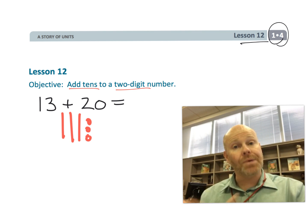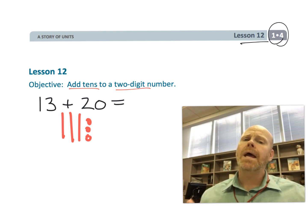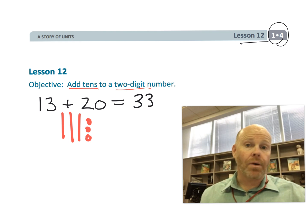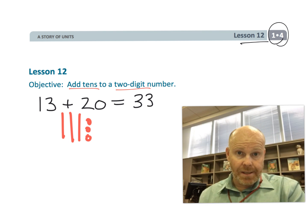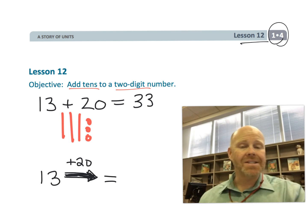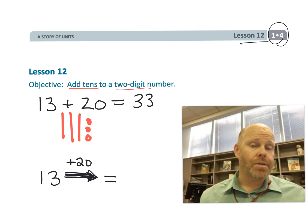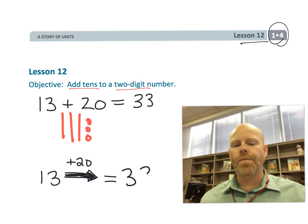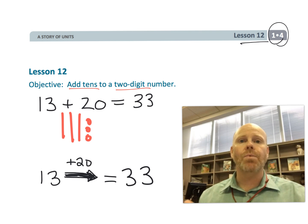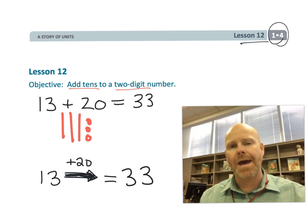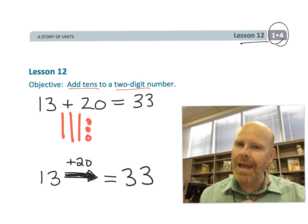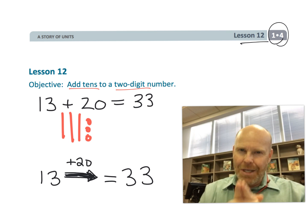We can notate that using the arrow method: 13, and then we have the plus 20 here as part of the arrow, and that equals 33. There's a variety of ways that we want our students to be interacting with the mathematics. At this point, we are not aiming for the standard algorithm. So let's get started.